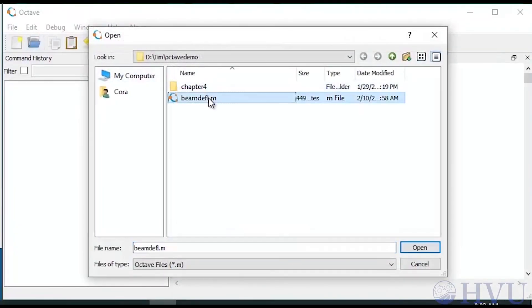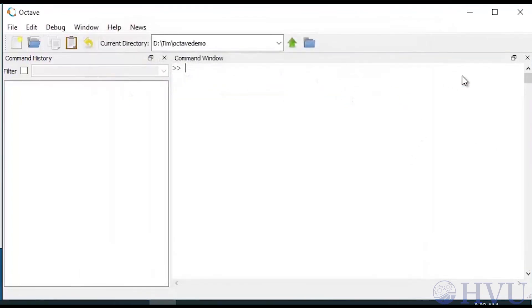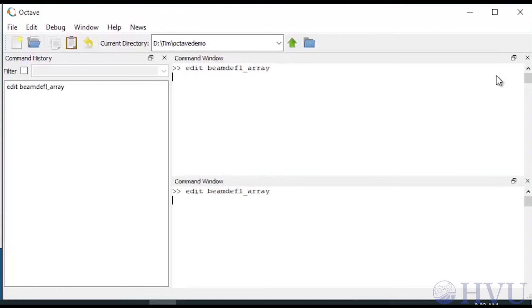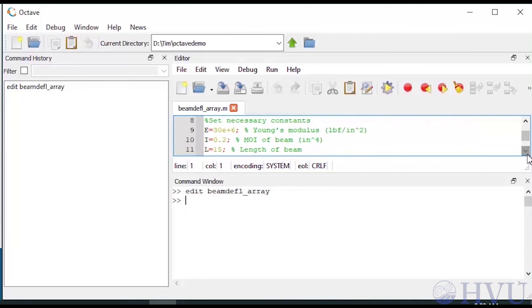Now I'm going to copy my BEAMDEFL file and rename it BEAMDEFL underscore array. To edit the file, I'll type edit BEAMDEFL underscore array. I need to change the multiplication and exponentiation operators to dotted operators.